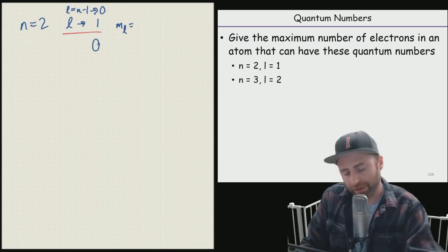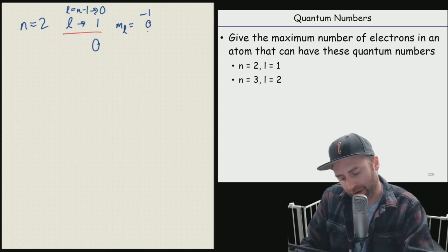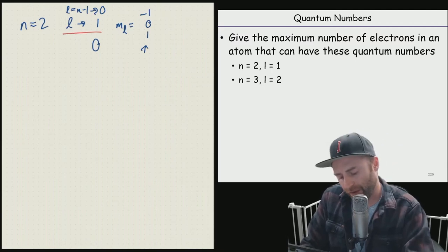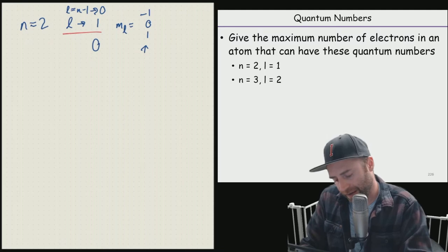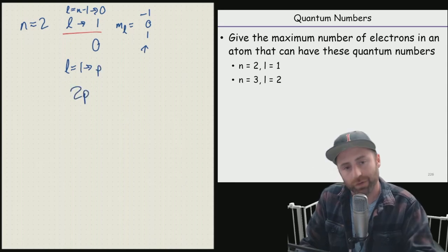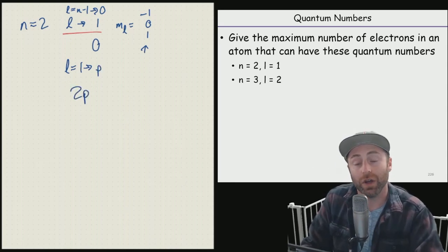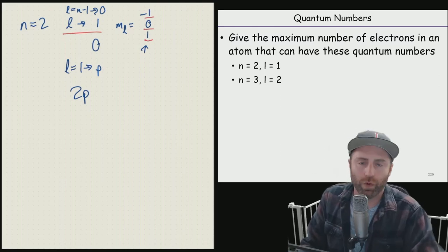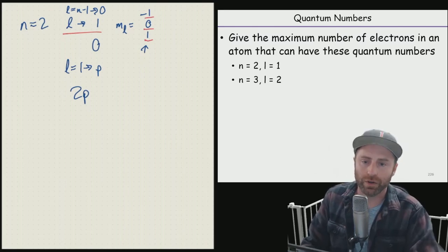When we now have our M sub L values, we can have an M sub L value equaling negative one, zero, and one. Now these are the number of subshells that we have. So L being one would say that we have a P orbital. L equals one means a P orbital. So specifically this is a two P subshell that we're talking about. And the number of subshells we're going to have here are one, two, and three.